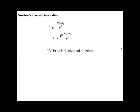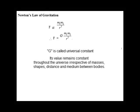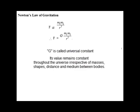G is called the universal constant. Its value remains constant throughout the universe irrespective of the type of the bodies, their shapes, their masses, distance between the bodies, and the medium between them. Its value is 6.67 × 10⁻¹¹ Newton meter square per kg square. The dimensions of universal constant G are M⁻¹, L³, and T⁻².